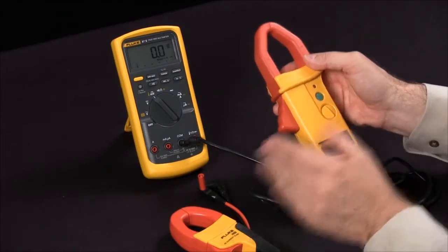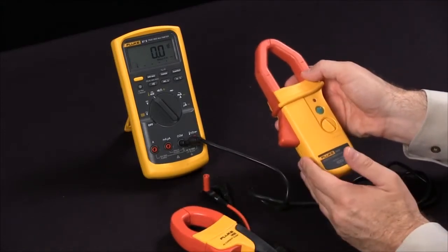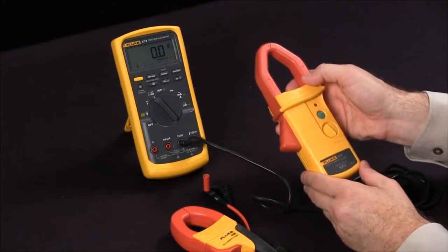At Fluke, we have the AC and AC/DC current clamps, just one of the many ways you can extend the capabilities of your digital multimeter.